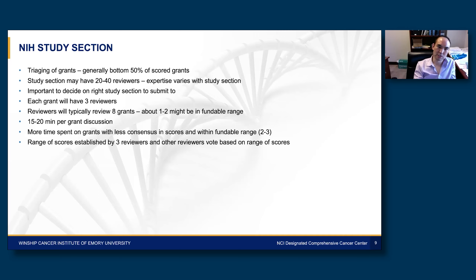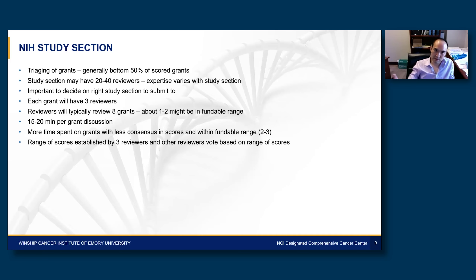It's important to decide which study section to submit to. You want reviewers that can understand your grant, but if they know your research area very well they might not appreciate the novelty, and if they're completely outside your area they might not understand it. Each grant gets three reviewers. Reviewers typically review eight grants, and maybe one or two will be in the fundable range. You need all three reviewers to give you less than a three to be in the fundable range — generally under the 30th percentile for funded grants. About 20 minutes per grant is spent in discussion, with more time on grants with less consensus in scores. The range of scores is established by the three assigned reviewers, and other reviewers vote based on that range, all in whole numbers.